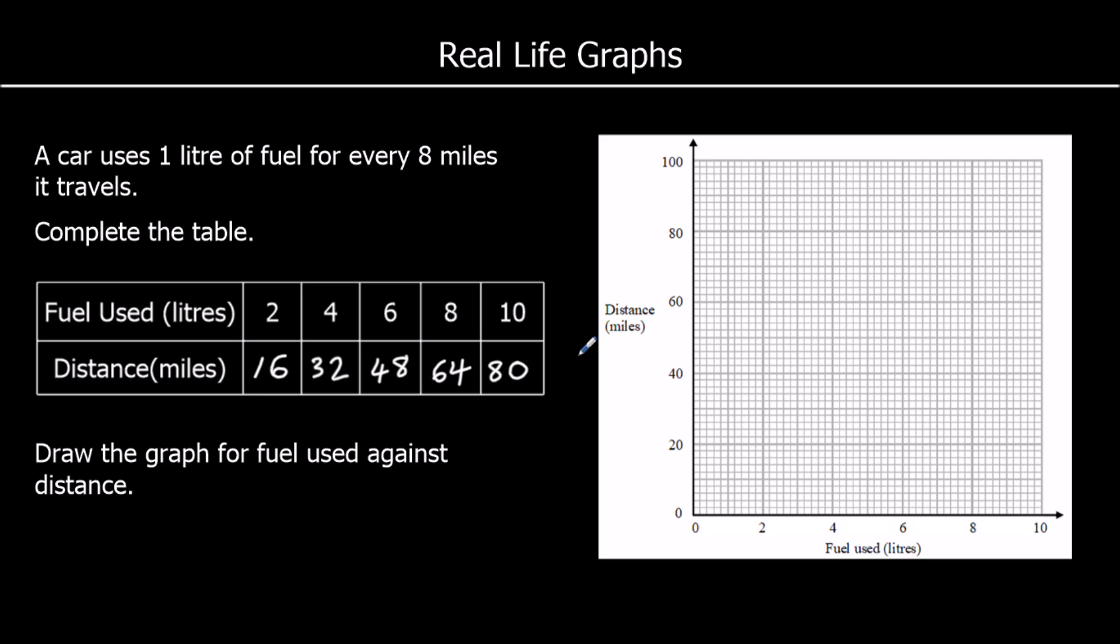Draw the graph for fuel against distance. So we're going to plot these. 2 litres against 16 miles. So 2 litres is here. So 16 miles. This graph is going up in 2's, so every small square is 2. So 10, 12, 14, 16.